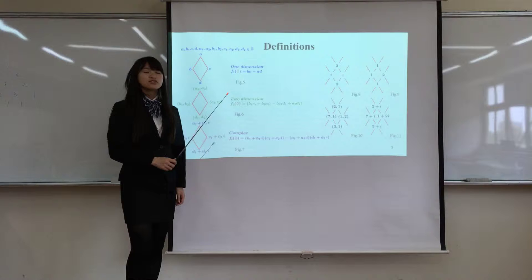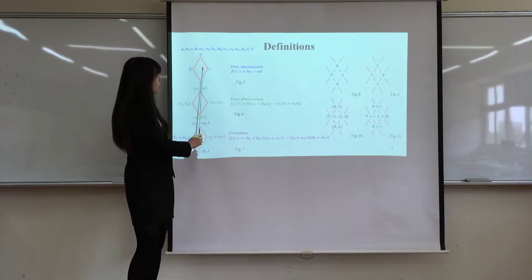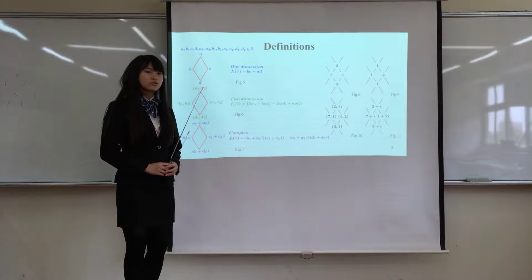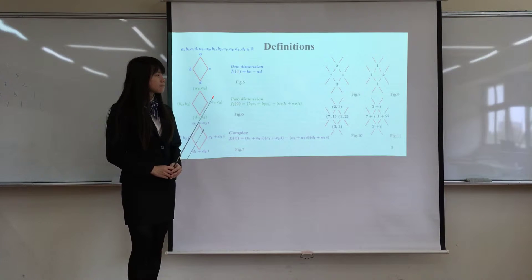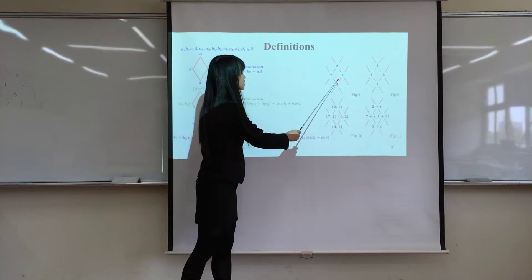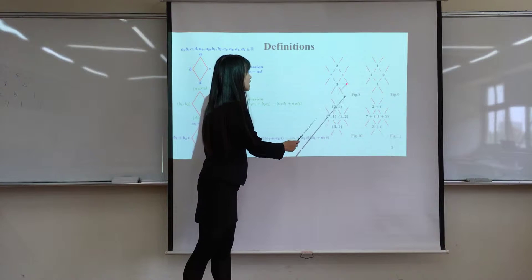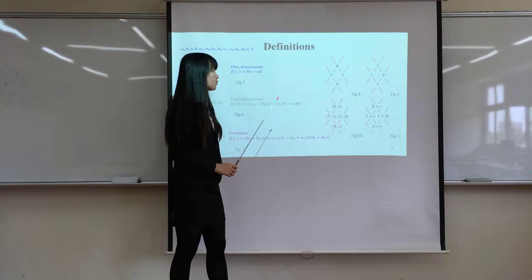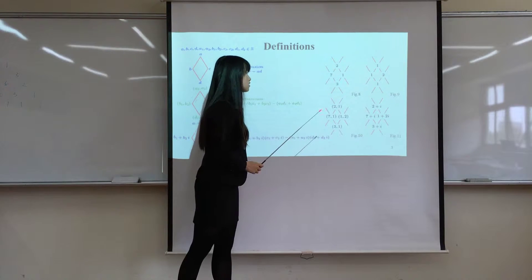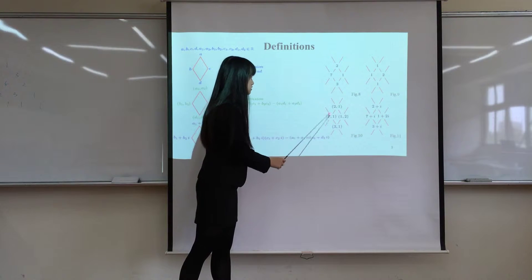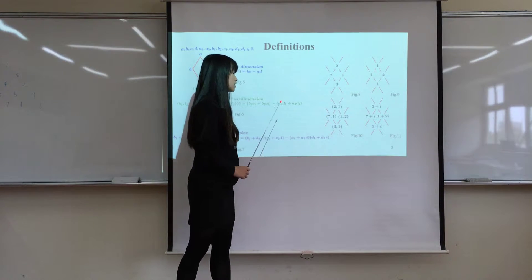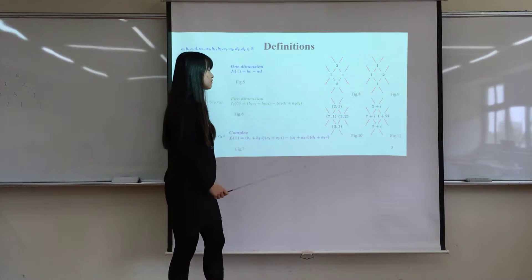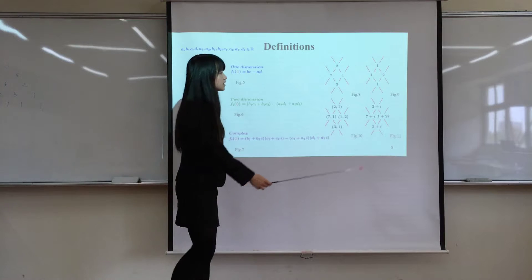This is our definition. We introduce functions f1, f2, and c, which extend one-dimensional phrase patterns to two-dimensional phrase patterns and complex phrase patterns. For example, on figure 8, the variable function phi of the variable is 7 times 1 minus 2 times 3 equals 1, and it represents not only the x-coordinate of figure 10.